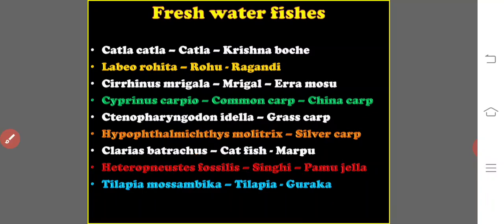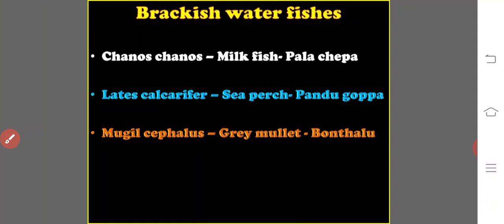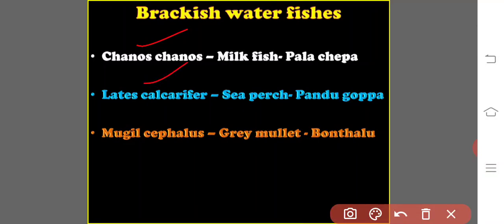Coming to brackish water fishes, the three main important organisms are: Chanos chanos, the milkfish (vernacular name: palachepa); Lates calcarifer, sea perch (vernacular name: pandukoppa); and Mugil cephalus, the grey mullet (vernacular name: bonthaloo).